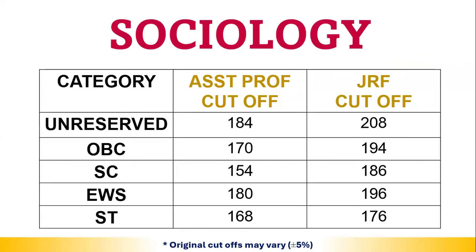Next is Sociology. For the general category, the Assistant Professorship cutoff is 184 and above — you will be eligible for Assistant Professorship. JRF will be 208. Other categories can check their respective cutoffs.